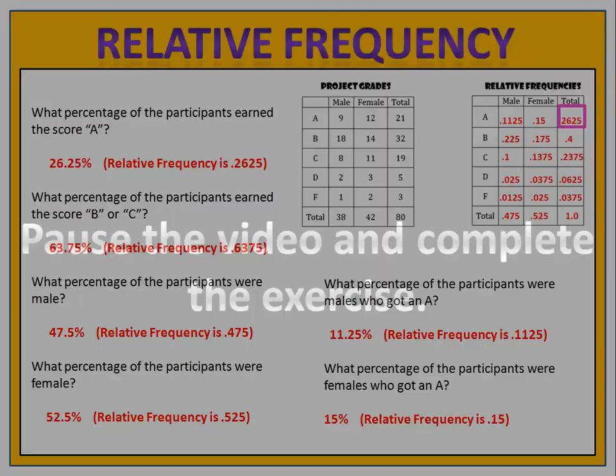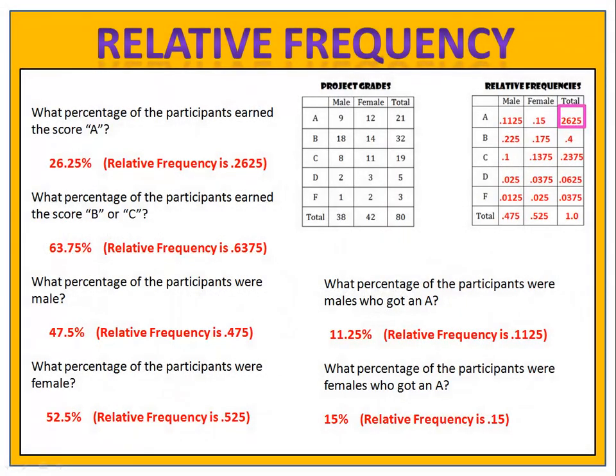Please pause the video here and complete the exercise by answering the questions. Here are the solutions. What percentage of the participants earned a score of A? We look at the end of the A row and we see 0.2625, or 26.25%. What percentage earned a score of B or C? We look at the end of the B and C rows and add them together: 0.6375, or 63.75%. What percentage of the participants were male? We look at the bottom of the male column and see 0.475, or 47.5%.